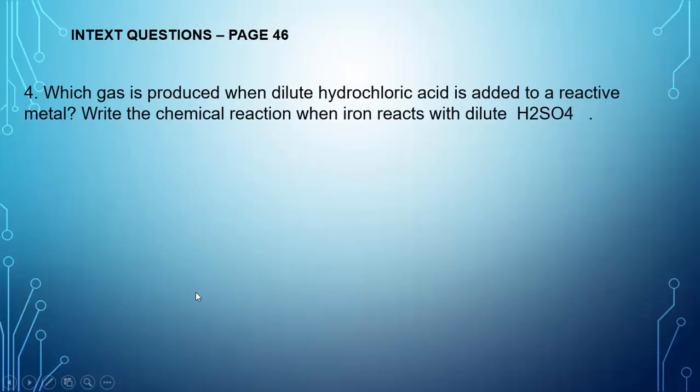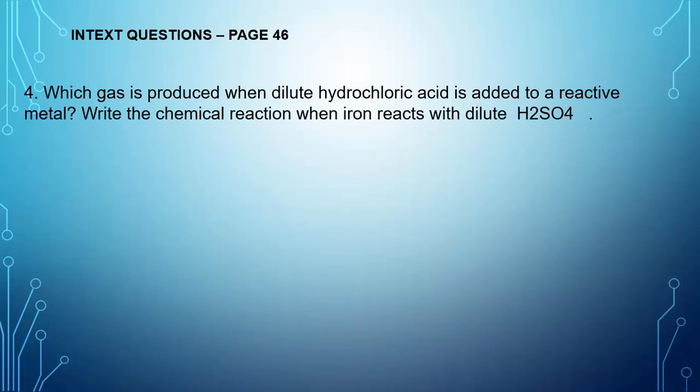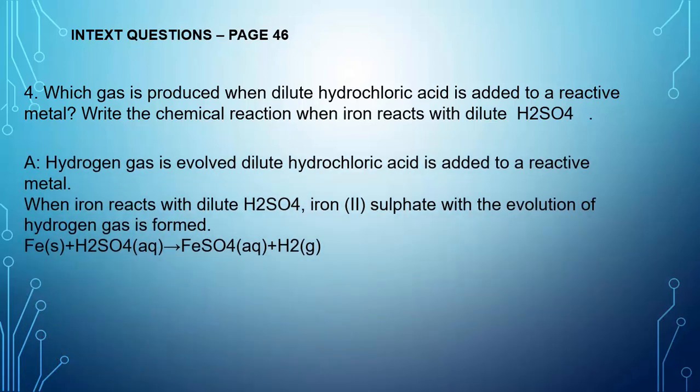Moving to page number 46, question number 4. Which gas is produced when dilute hydrochloric acid is added to a reactive metal? Similarly, when iron reacts with dilute H2SO4, iron sulfate with hydrogen gas is formed. See here is the equation for the reaction Fe plus H2SO4 gives FeSO4 plus hydrogen gas.